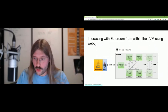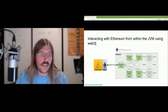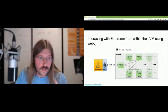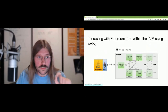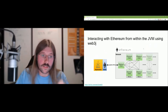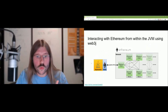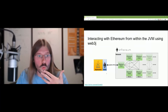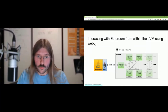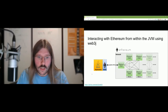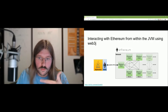In the remaining minutes I want to show how we can interact from Groovy with smart contracts deployed on an Ethereum blockchain. For this, we use a library called Web3J. Libraries for interacting with Ethereum are always called something with Web3, and Web3J is a Java implementation for the JVM.